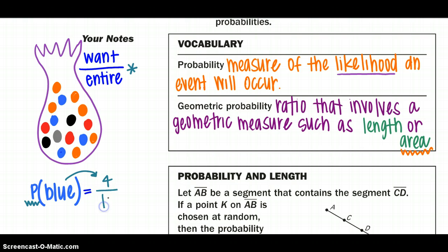And I have 16 marbles in my bag. Always reduce, reduce, reduce. That becomes to one over four. And I'm going to put that in a decimal form and in a percentage form. So it's a 25% chance I will pull a blue marble out of that bag.